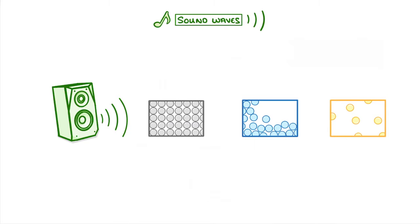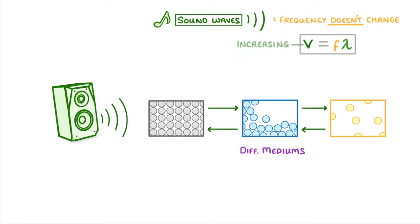Now, one really important point is that as sound waves pass between different mediums and speed up or slow down, their frequency doesn't change. The reason this is really important is because if we look at the speed equals frequency times wavelength equation, we can see that if speed is increasing, but the frequency remains the same, then the wavelength must increase instead.